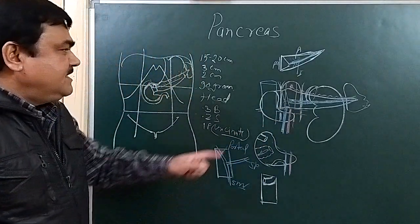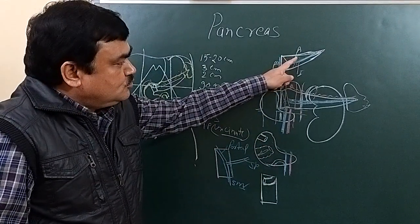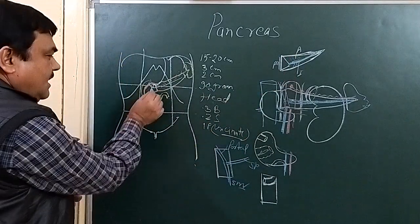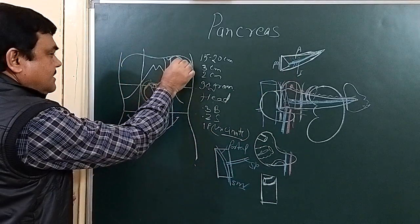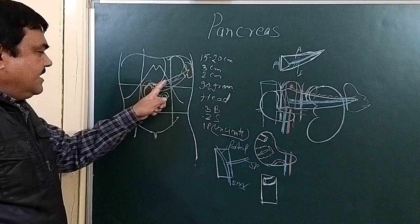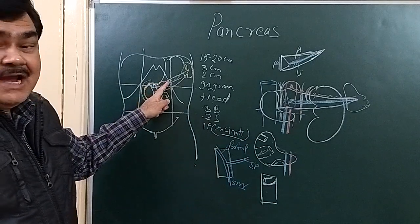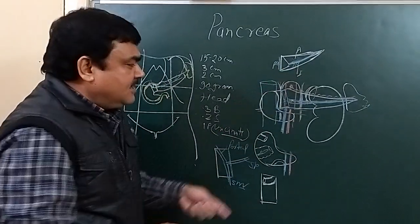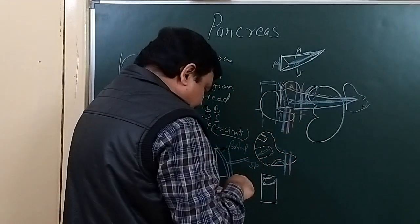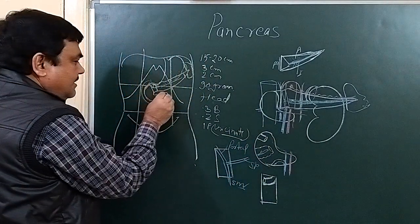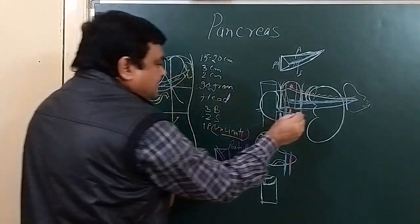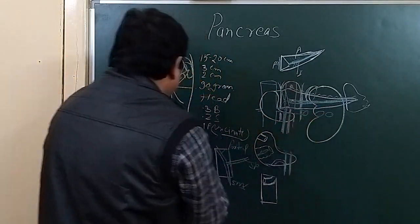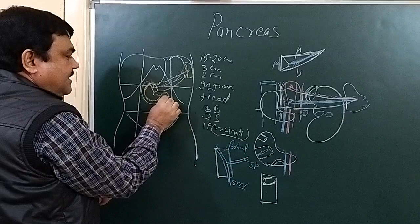Regarding the surfaces of the body: the anterior surface is related with the stomach and the lesser sac. The inferior surface is related with the coils of the intestine.